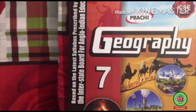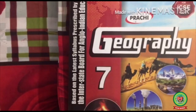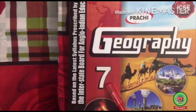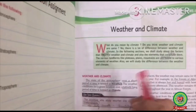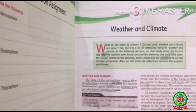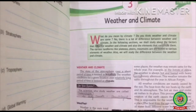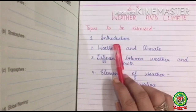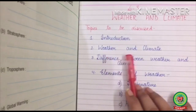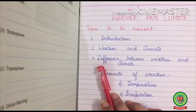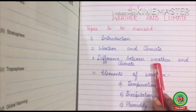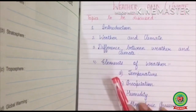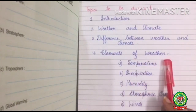Good morning students. Take out your geography book, class 7th. Today we are going to start with the new lesson — it's lesson number three: Weather and Climate. The topics to be discussed in this lesson are: number one, introduction; number two, weather and climate; number three, difference between weather and climate; number four, elements of weather.